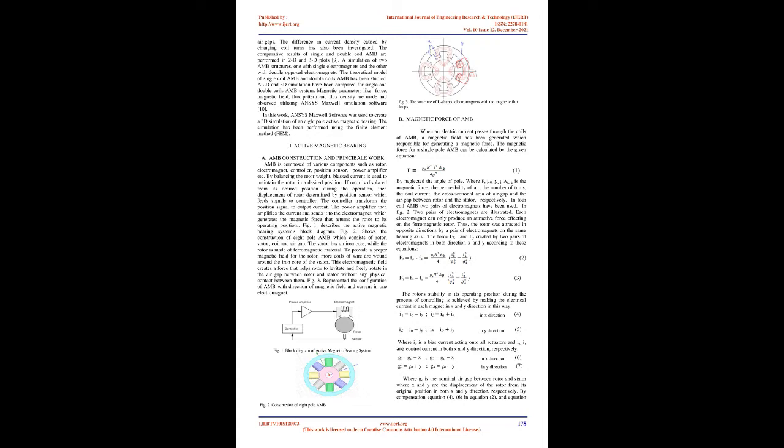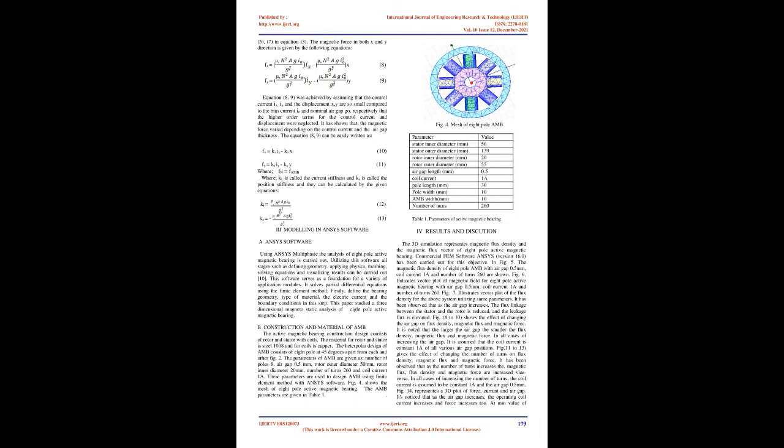Active Magnetic Bearing (AMB) Construction and Principle: AMB is composed of various components such as rotor, electromagnet, controller, position sensor, and power amplifier. By balancing the rotor weight, biased current is used to maintain the rotor in a desired position. If the rotor is displaced from its desired position during operation, the displacement of the rotor is determined by a position sensor which feeds signals to the controller. The controller transforms the position signal to output current, and the power amplifier then amplifies the current and sends it to the electromagnet, which generates the magnetic force that returns the rotor to its operating position.